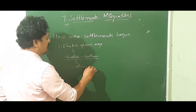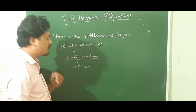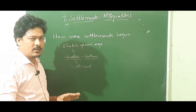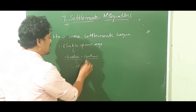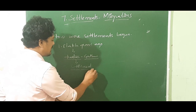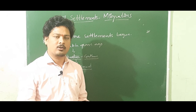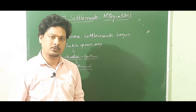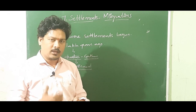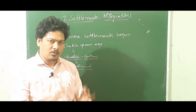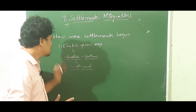He left his nomadic life and started gathering foods. Afterwards he started rearing animals and came to know about the cultivation of crops. In this way, the human being started understanding how to live in one place. This is how settlement started.